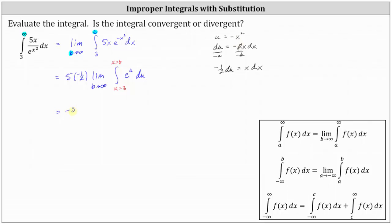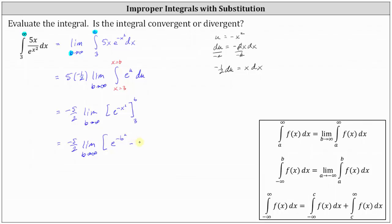So we have negative five-halves times the limit as b approaches infinity of the antiderivative, which is e to the power of negative x squared. The limits of integration with respect to x are from three to b. Now we need to determine F(b) minus F(3) and then determine the limit. F(b) is e to the power of negative b squared, and F(3) is e to the power of negative three squared, or negative nine.